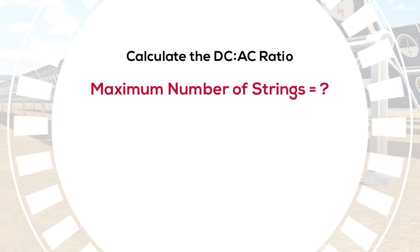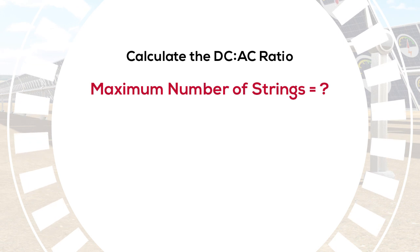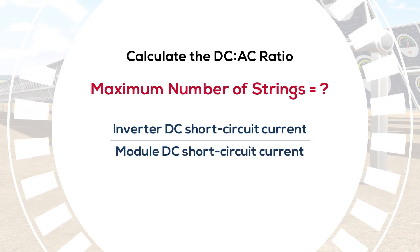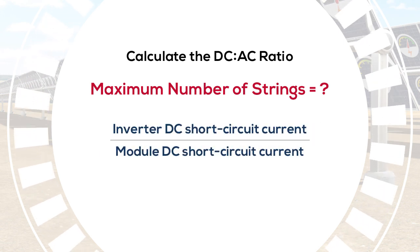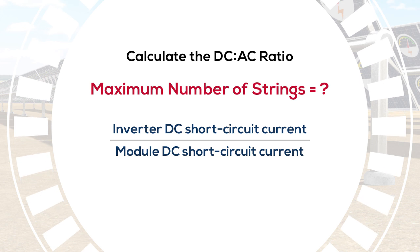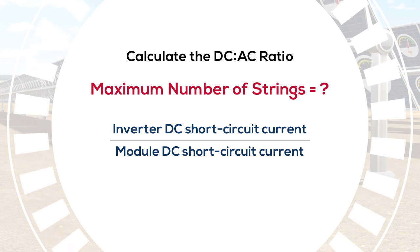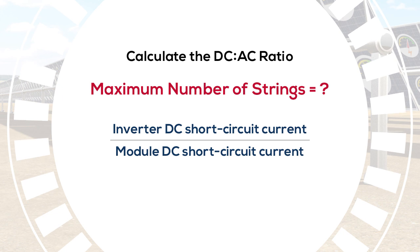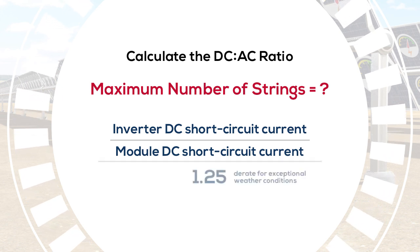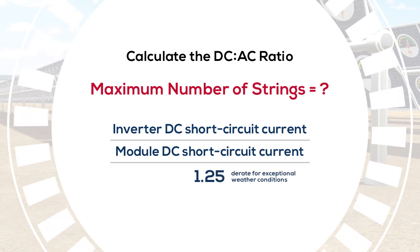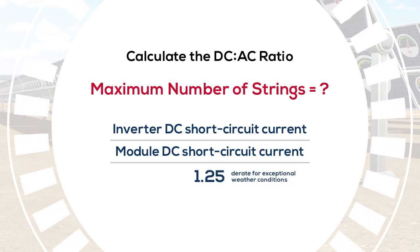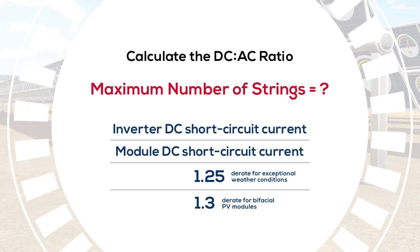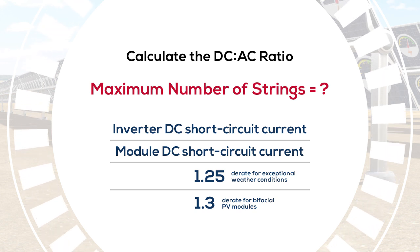The first step is to calculate the maximum number of strings. It's the short circuit current rating of the inverter divided by the short circuit current of the module. You also have to apply two D-rate factors per the National Electric Code: a 1.25 D-rate for exceptional weather conditions and a 1.3 D-rate for bifacial PV modules.